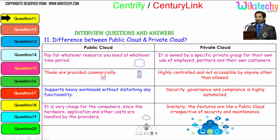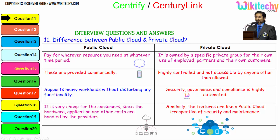Public cloud services are provided commercially. Private cloud is highly controlled and not accessible to anyone other than those allowed. It supports heavy workloads without disturbing any functionality, and security, governance, and compliance are highly automated. Public cloud is very cheap for consumers since the hardware, application, and other costs are handled by the providers.